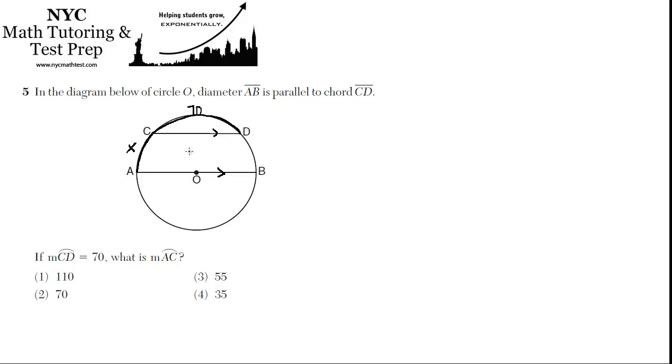So there's a rule that if you have two parallel chords in a circle, that the arcs that they intercept, or the arcs that are between them, must be the same. So if this is X, if AC is X, then DB must also be X, they must be equal.